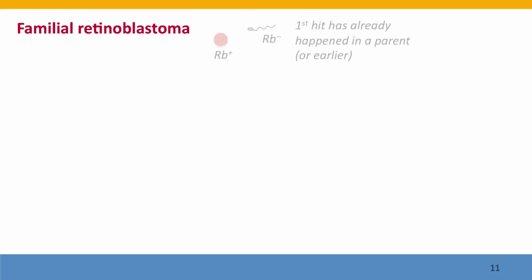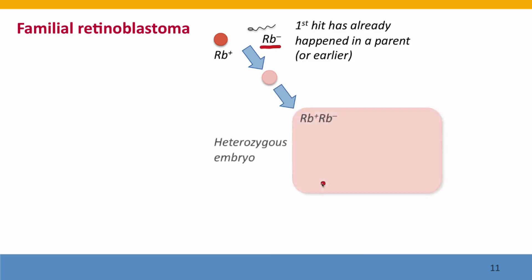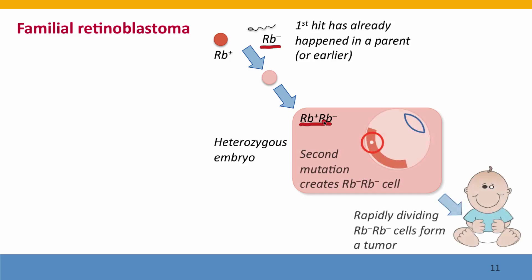In familial retinoblastoma, the first hit has already happened in one of the parents, or perhaps earlier in a grandparent. One of the gametes carries a defective RB allele. This results in an embryo that's heterozygous for a mutant allele. Now it only takes one RB mutation in any cell in the retina to create the tumor precursor cell that will divide and develop into the tumor.